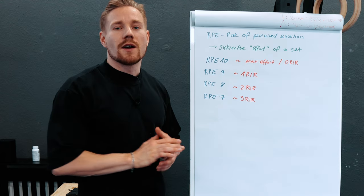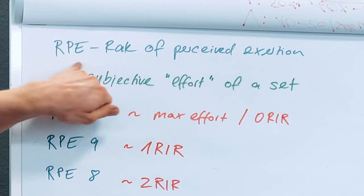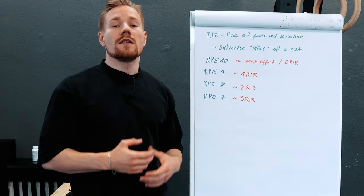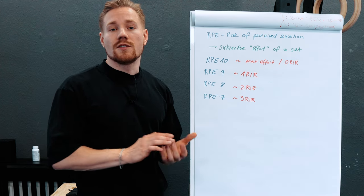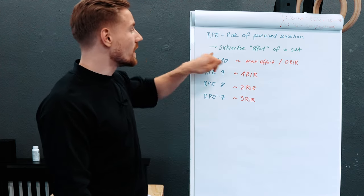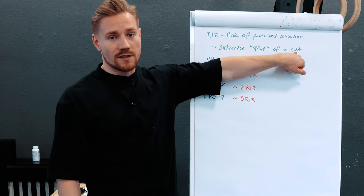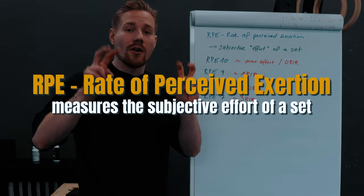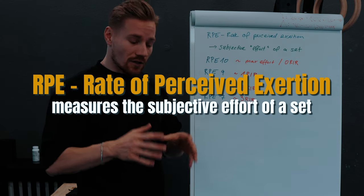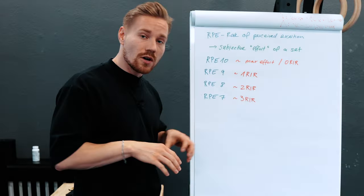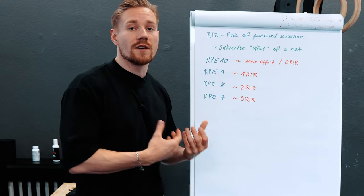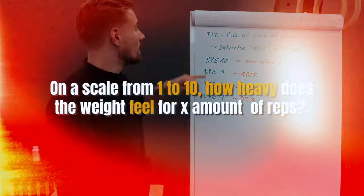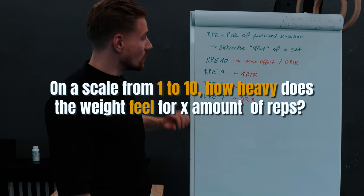First, we're going to clarify what RPEs actually are. RPE stands for Rate of Perceived Exertion, and it is basically a scale used in strength sports to rate the subjective effort of a set — the relative intensity of a set, and how heavy that felt. Not how heavy the actual load on the bar was, but how heavy it felt moving it for a given number of reps. You use a scale from 0 to 10.